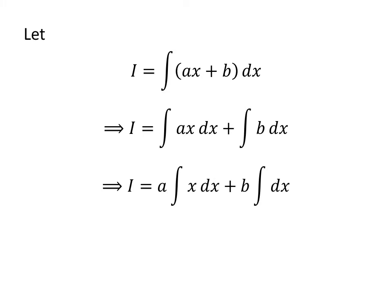As a and b are constants, we can take out the constant. Thus, I equals a times the integral of x with respect to x plus b times the integral of 1 with respect to x.